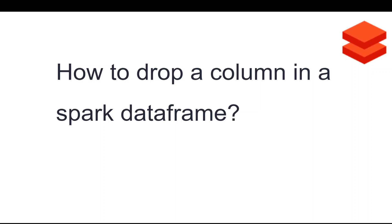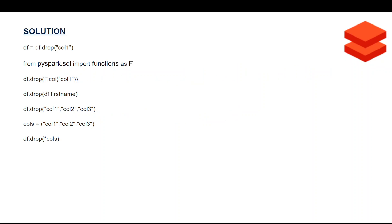Next: how do you drop a column in a Spark DataFrame? You can simply use df.drop() and put in the column name. If you have a list of column names to drop, you can pass that list as well. For example, if you have column1, column2, and column3 to drop, you can use df.drop(*cols). You can also import functions from pyspark.sql as F and use the col() function to specify a column name before dropping it.